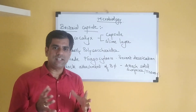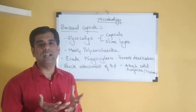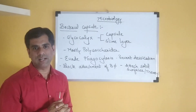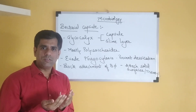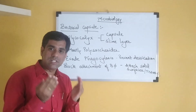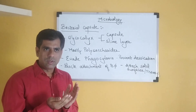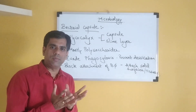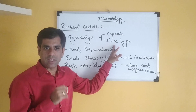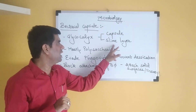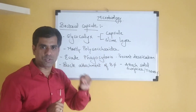Glycocalyx is a general term for a polysaccharide layer which is adhering to a typical gram positive or a gram negative bacterial cell. Now this layer, if it is very loosely arranged and loosely bound, it can be easily removed and is generally common to many bacteria together, and is referred to as the slime layer. Today we will be referring to a more specific structure called the capsule.